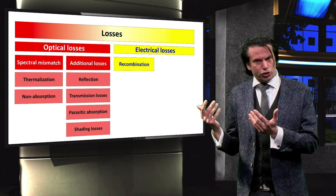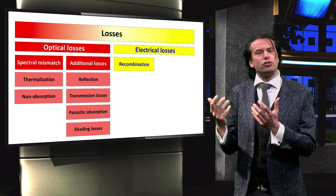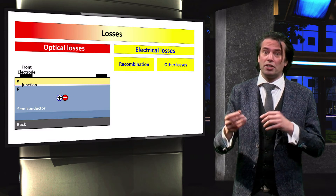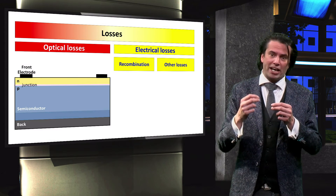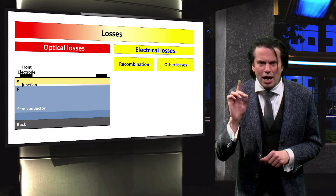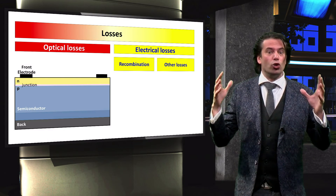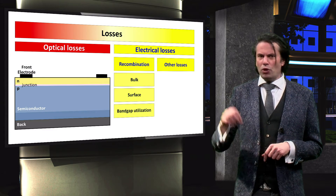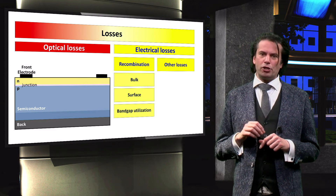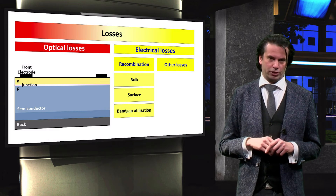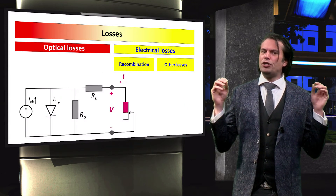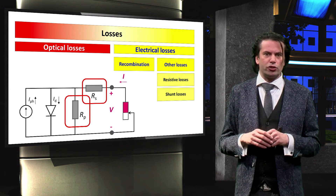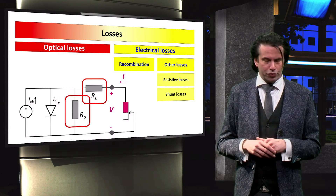In the electrical losses section, we consider recombination losses and other losses. Recombination losses occur when an electron after excitation falls back to its initial energy state — that absorbed energy is essentially lost and cannot be converted into electrical energy. We will discuss three special cases of recombination in the section on semiconductor physics. The other electrical losses involve resistive losses and shunt losses, as discussed in the video on the equivalent circuit of the solar cell.